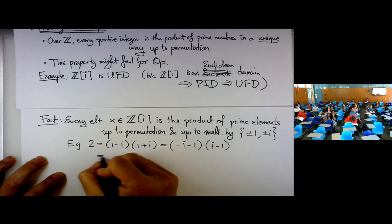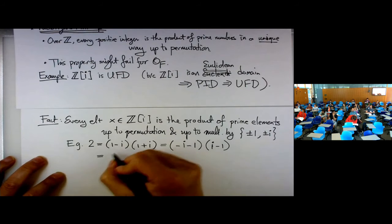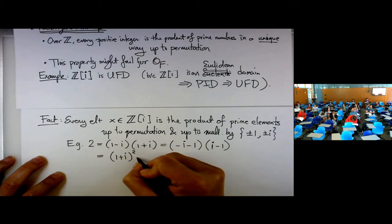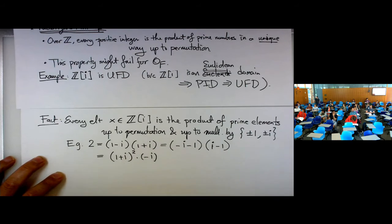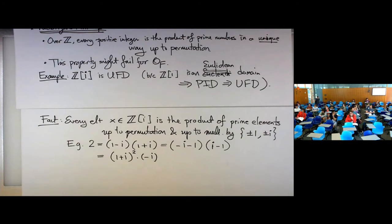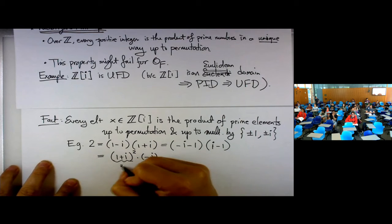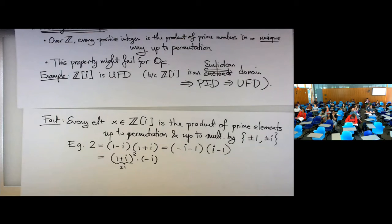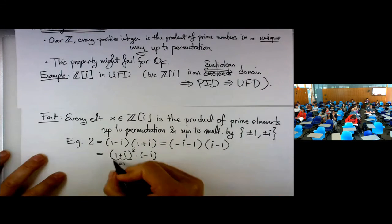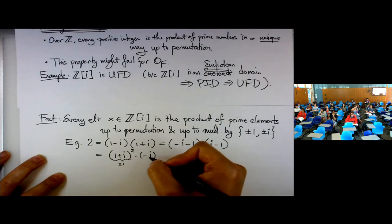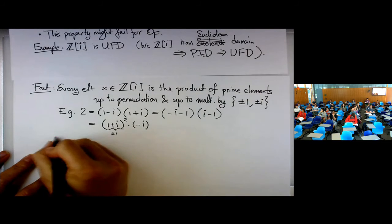You can also write 2 as (1 plus i) squared times negative i. Since (1 plus i) squared equals 1 plus 2i minus 1 = 2i, and 2i times minus i is 2. So you can write 2 as a prime squared times a unit — this is a more intrinsic definition. Now I'm going to list all the prime elements in Z[i].